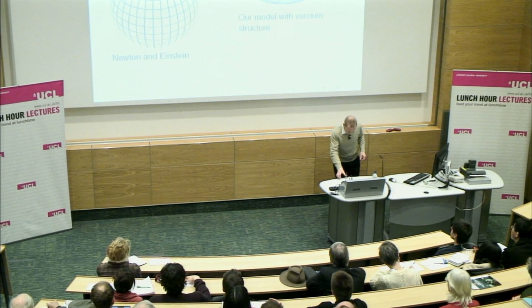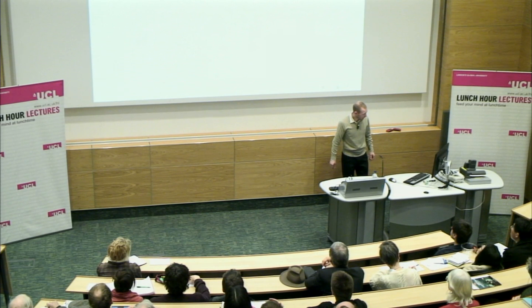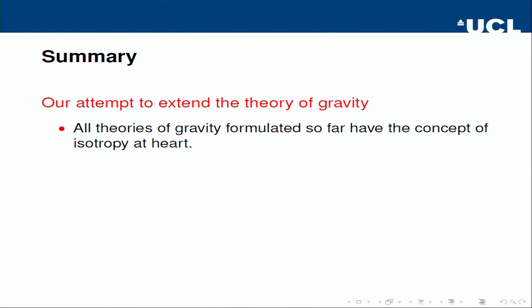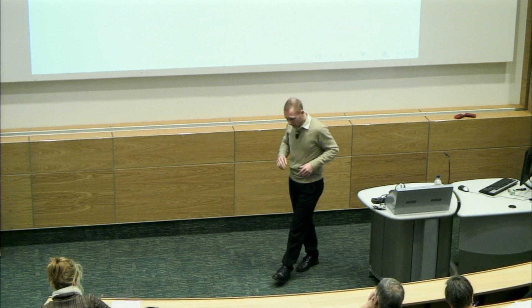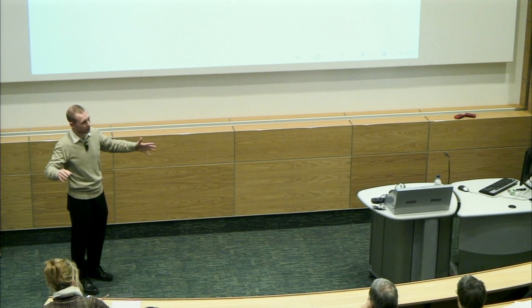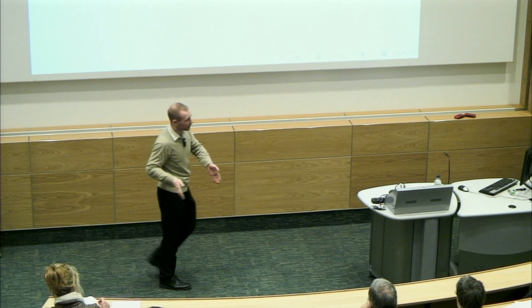We are proposing a meaningful extension of these theories. To summarize: all gravitational theories proposed so far — including string theory and supergravity — have isotropy at their heart, meaning the gravitational force is the same in all directions. We are trying to create a theory that is actually reasonably conservative: it doesn't require 26 or 10 dimensions, no new fields, no hundreds of new particles. The only addition is a slight structure that is not new to physics at all — crystal symmetries have been known for a very long time.